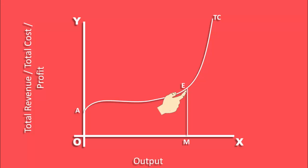Vertical distance is the total cost. ME is the total cost of OM output. We shall superimpose the total revenue curve on the same graph. We have both revenue and cost curves.